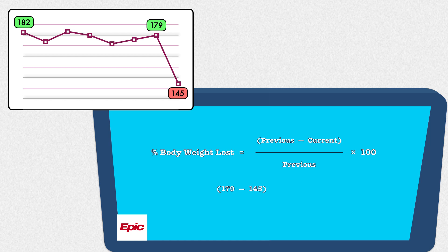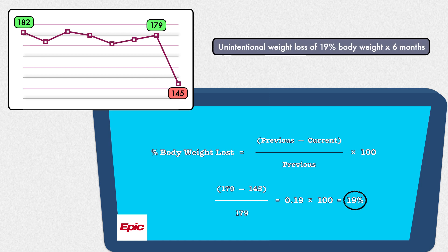So we take 179 pounds from 5 months ago and subtract the current weight of 145, then divide by 179 pounds to get 0.19. Finally, we multiply 0.19 by 100, and the final result is 19%. The patient has an unintentional weight loss of 19% body weight in the past 6 months.